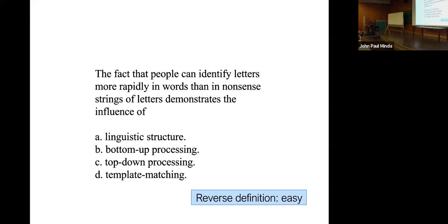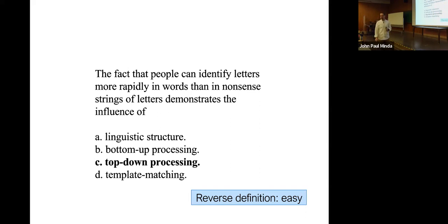Here's a reverse definition question: 'The fact that people can identify letters more rapidly in words than in nonsense strings of letters demonstrates the influence of: linguistic structure, bottom-up processing, top-down processing, or template matching?' The answer is top-down processing. This is like a Jeopardy answer — you get the whole definition and pick the term. This is also an explanation for the word superiority effect, which was on the study guide.